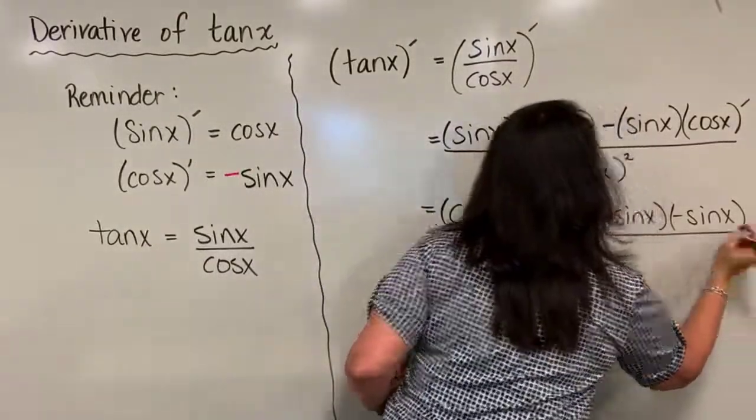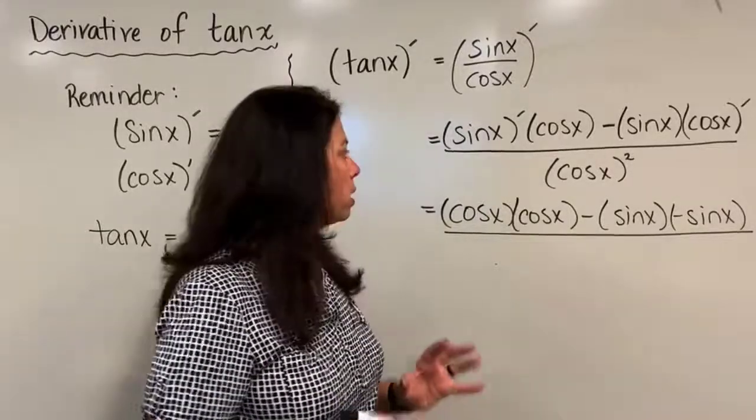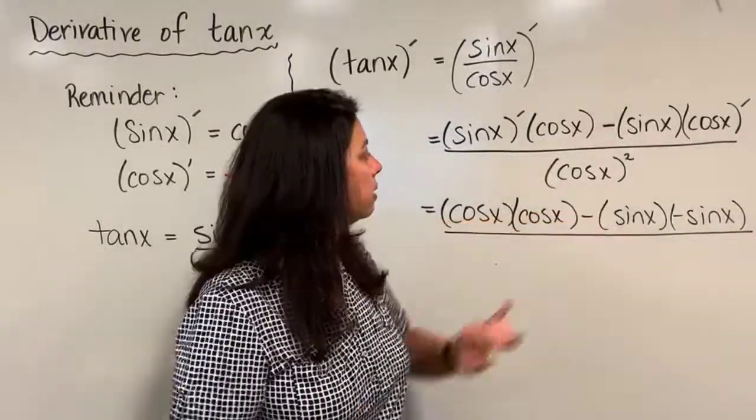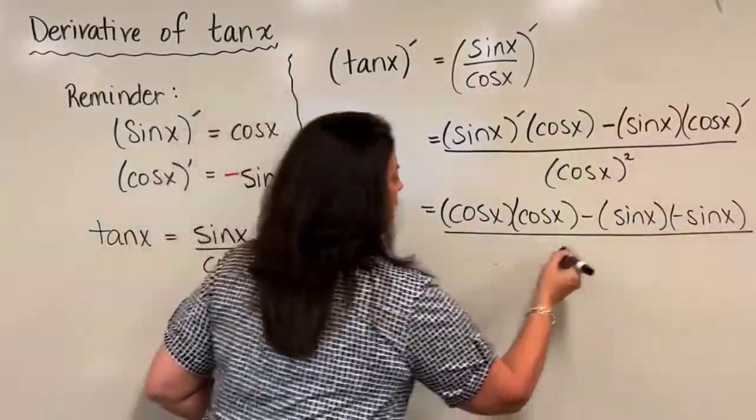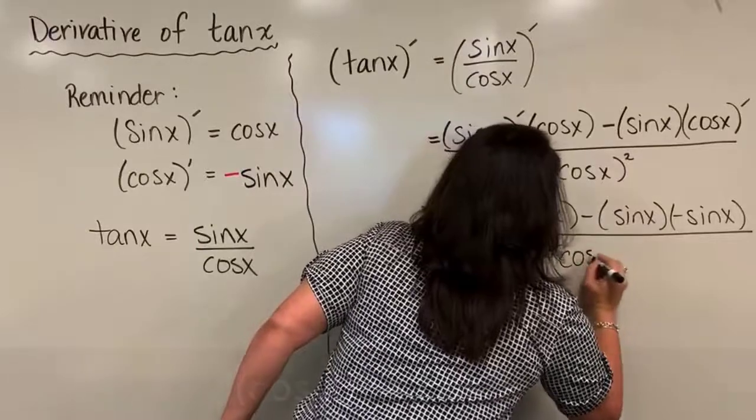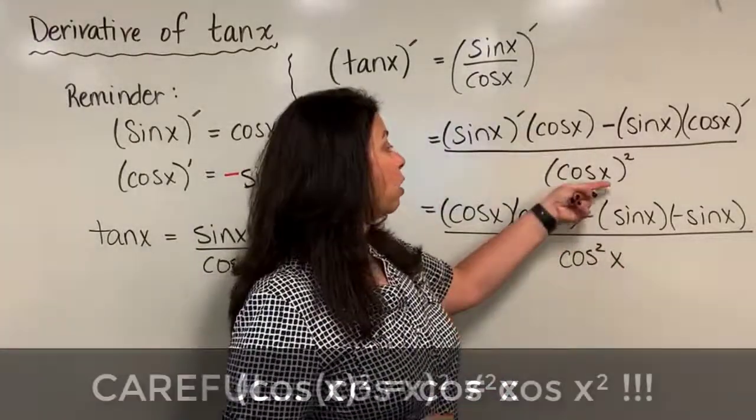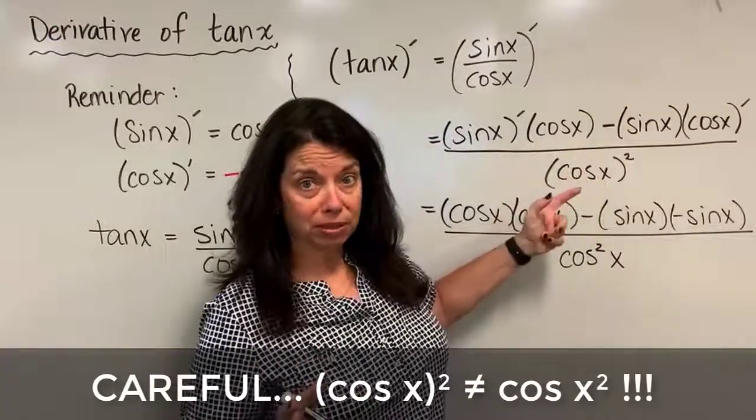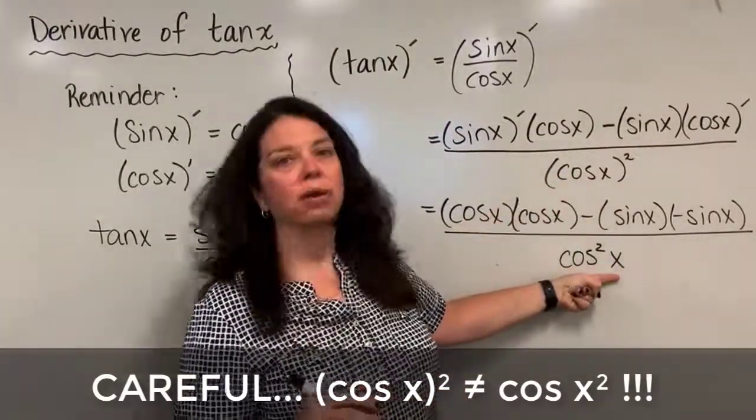And of course I still have all of this being divided by cosine x quantity squared. Now just to note you can keep writing this as cosine x quantity squared or alternatively you could write that as cosine squared x. But be careful it's not cosine x squared without parentheses. So it's either written this way with parentheses or this way without parentheses.